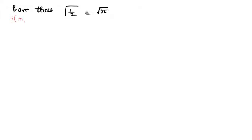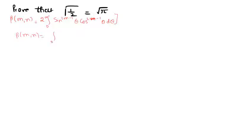The value of beta(m,n) we have already studied — the integral form ranging from 0 to 1. Now there is a trigonometric form: 2 times the integral from 0 to π/2 of sin^(2m−1)(θ) cos^(2n−1)(θ) dθ. We want to derive this from the standard form: beta(m,n) = ∫₀¹ x^(m−1)(1−x)^(n−1) dx.